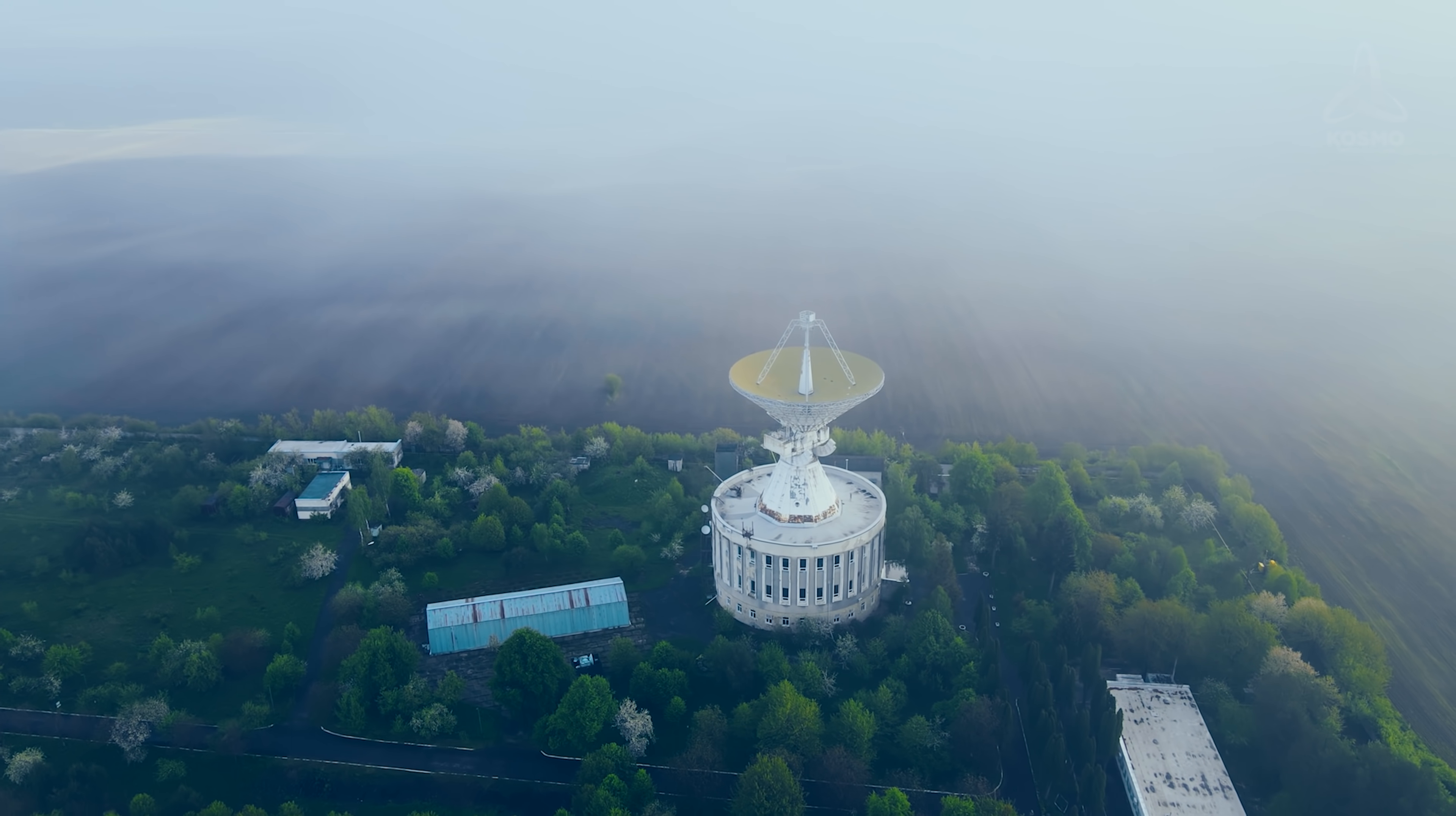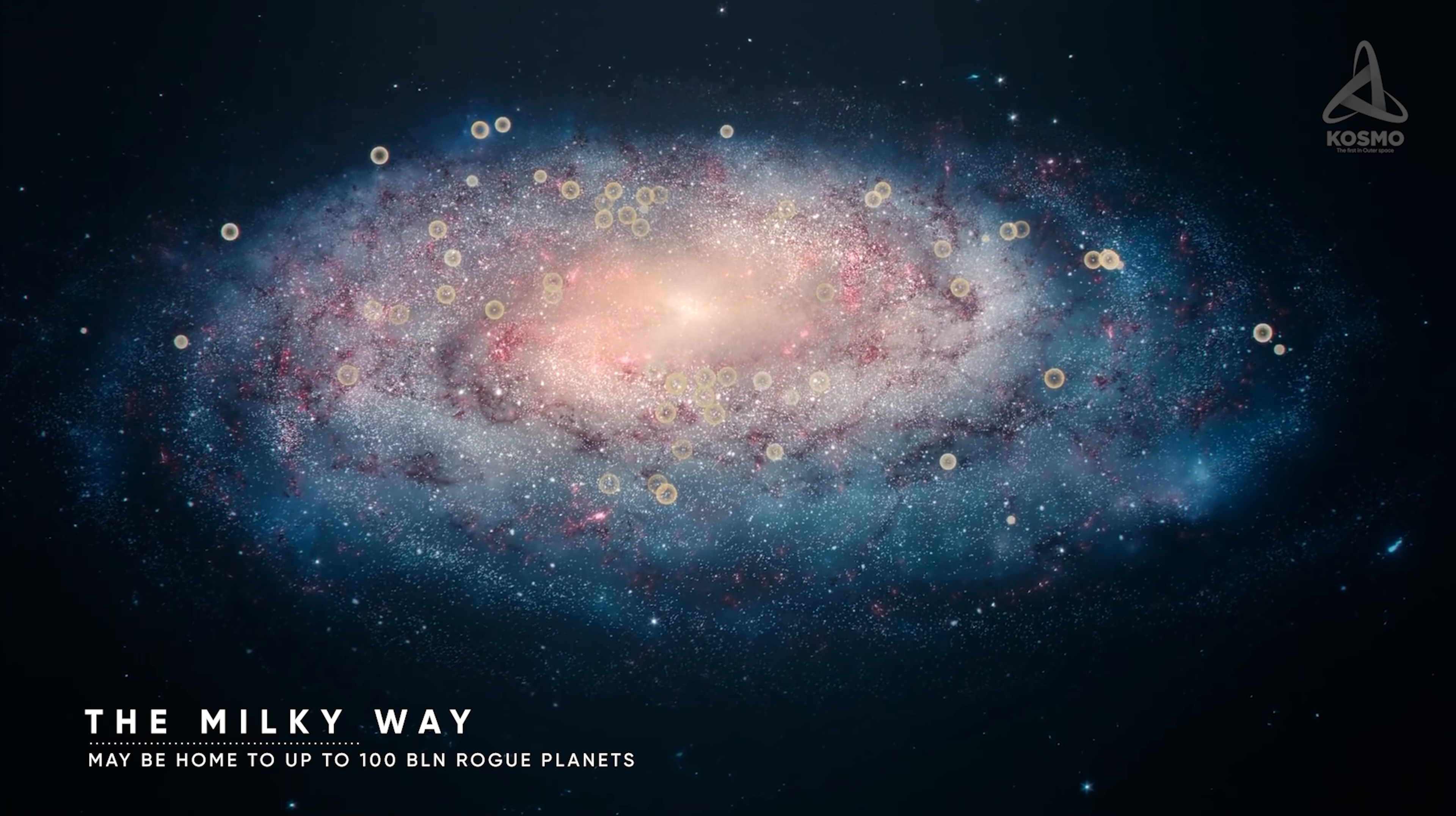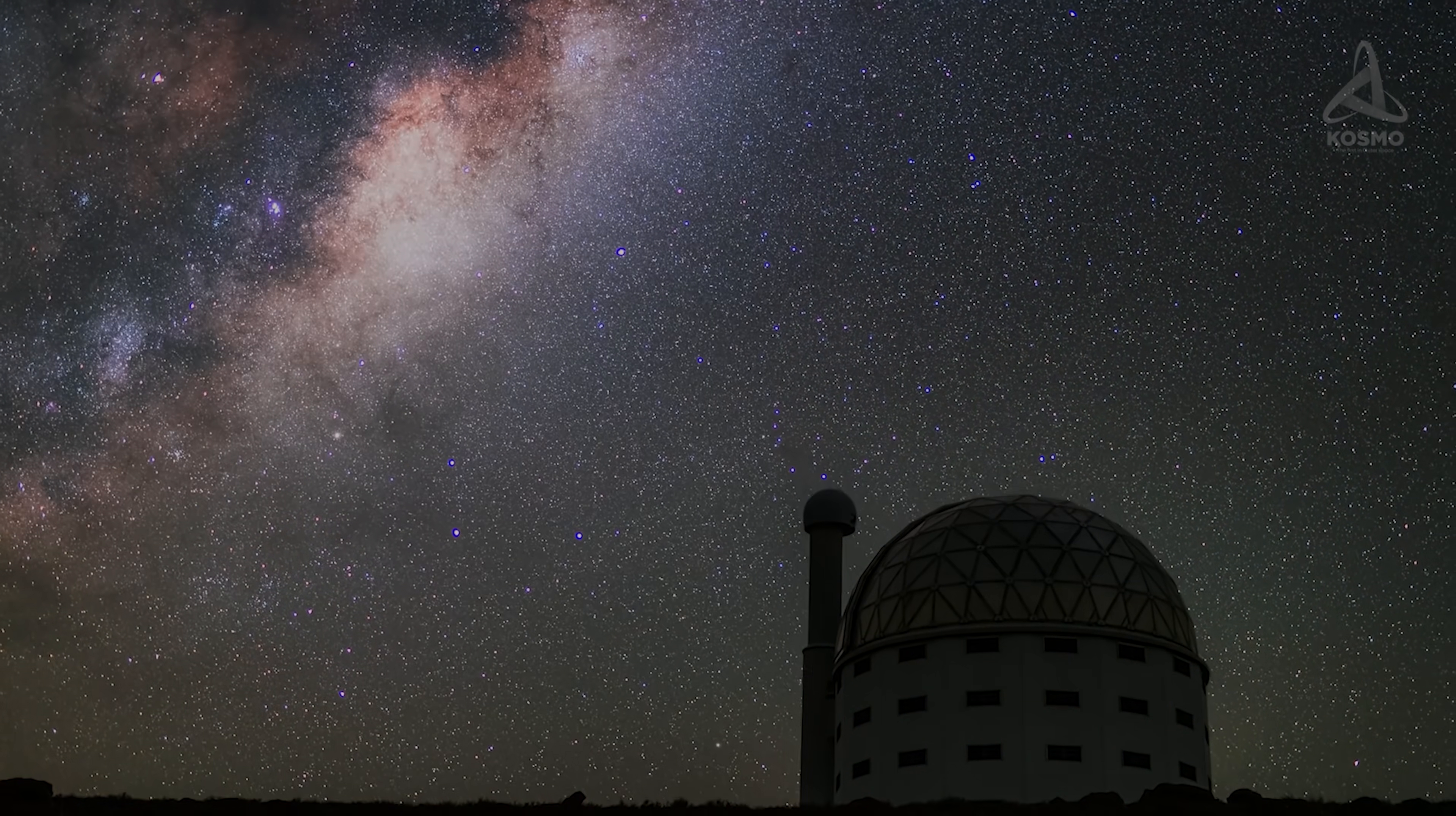Incidentally, according to the analysis of data collected in the course of the OGLE project, the Milky Way may supposedly be home to up to a hundred billion objects of this class. This may only mean that right now, we are at the very beginning of an upcoming series of discoveries in this field. Our notions of what rogue planets are like have long been based purely on assumptions and hypotheses. With the technological advancement of highly sensitive observation equipment, there arose opportunities to put them to the test in practice.